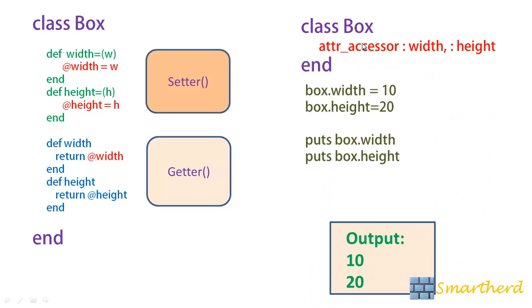Here we got class box in between we have a line of code then end of the class. This line of code attr underscore accessor colon width comma colon height is the shortcut to getters and setters.